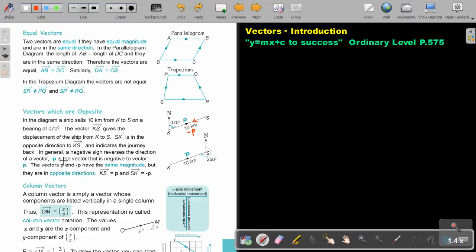So negative P is the vector that is negative to the vector P. The vectors P and negative P have the same magnitude, but they are in opposite directions. So KS is P and SK is negative P.